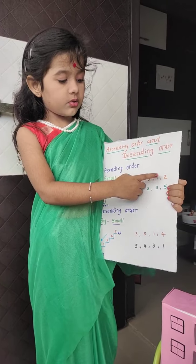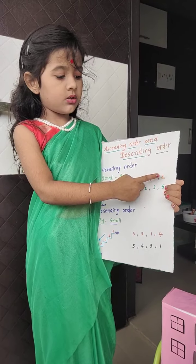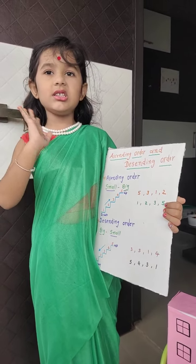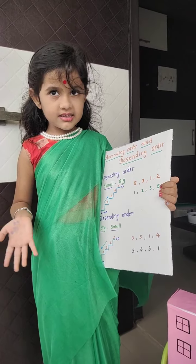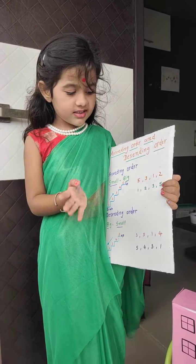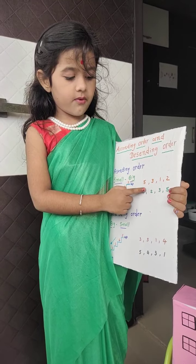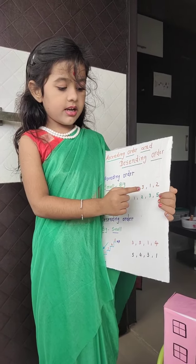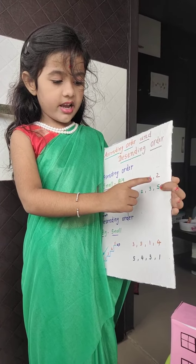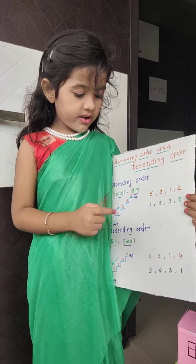5, 3, 1, 2 — which is smallest? The smallest is 1, then 2, then 3, then 5.